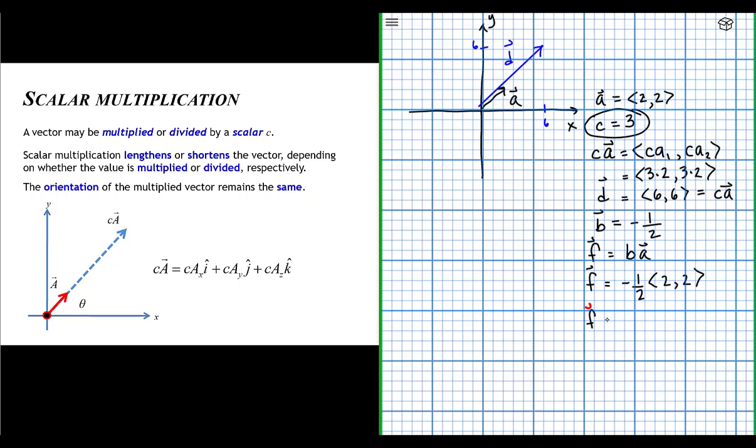Vector f is equal to minus 1 half times 2, minus 1 half times 2. Vector f is a new vector that has an x component of minus 1 and a y component of minus 1. So let's look at vector f.